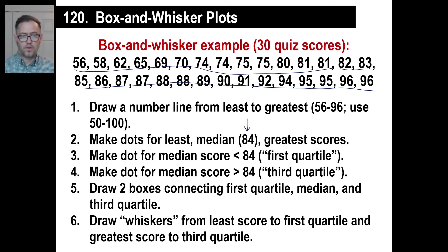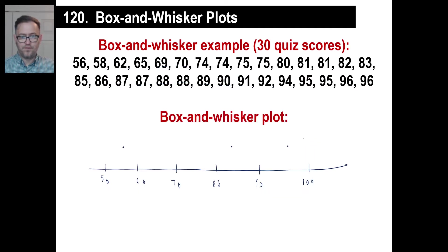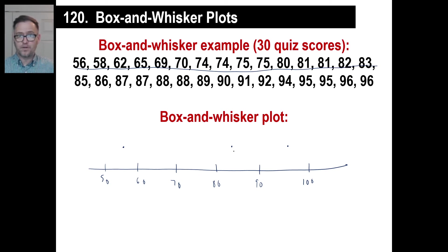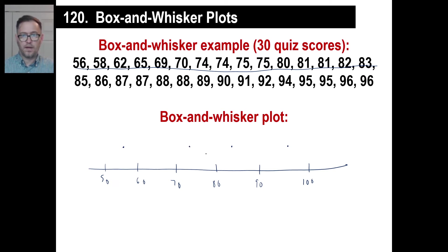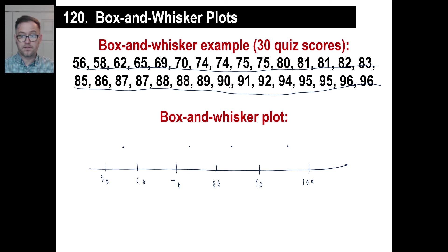Fourth thing is we're going to make a dot for the median score that's less than 84. What's the median score for everything that's less than 84? We picked the median of the ones less than 84 because 84 is our actual median — we went right between 83 and 85 since this is an even number. There are 15, so we go one through eight — there's our median of the first half. So we're going to make a dot right around there. Then we'll make a dot for the median of the second batch — we'll call this the third quartile. We'll count to eight — that's going to be 90. So there's our dot right there.